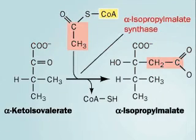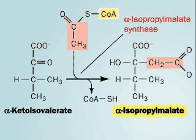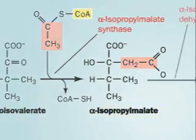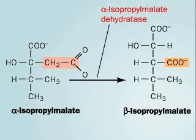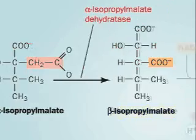Acetyl-CoA contributes an acetyl group, making alpha-isopropylmalate, which then isomerizes to beta-isopropylmalate.